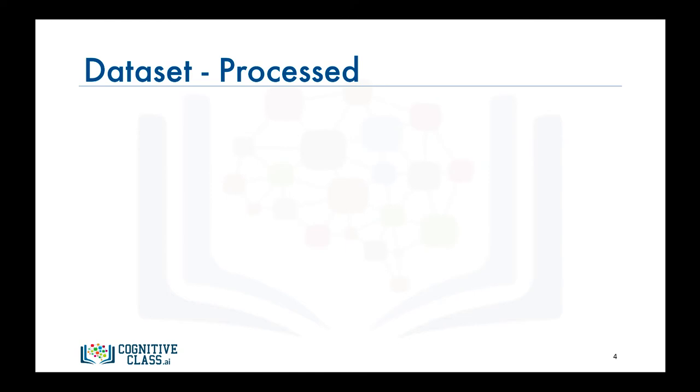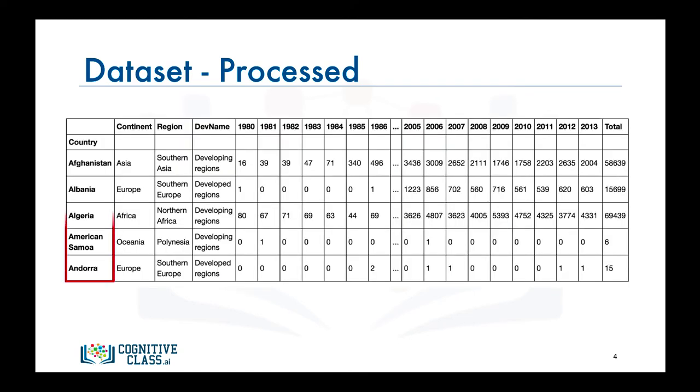Now let's process the data frame so that the country name becomes the index of each row. This should make retrieving rows pertaining to specific countries a lot easier. Also, let's add an extra column which represents the cumulative sum of annual immigration from each country from 1980 to 2013.